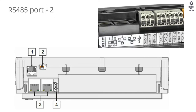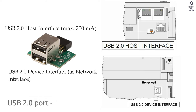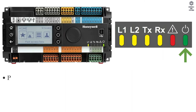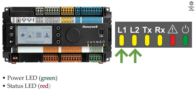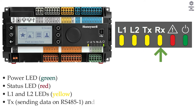Bus interfaces: RS-485 ports are 2, Ethernet interface ports are 2, USB 2.0 ports are 2, RS-232 port is 1. LEDs: power LED, status LED, LAN 1 and LAN 2 LEDs, TX for sending data on RS-485-1, and RX for receiving data on RS-485-1.